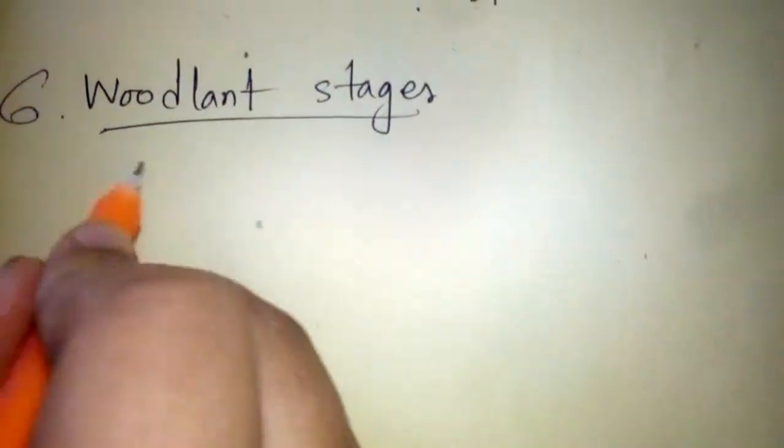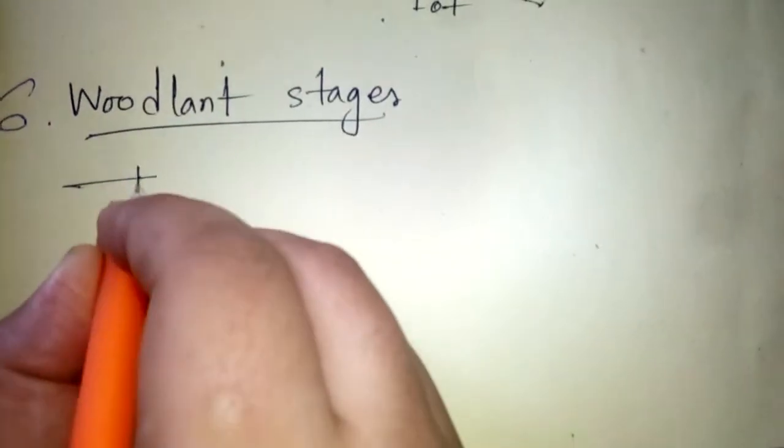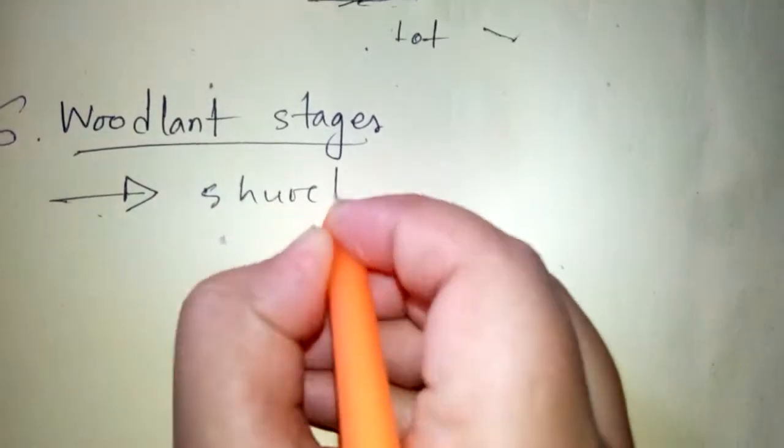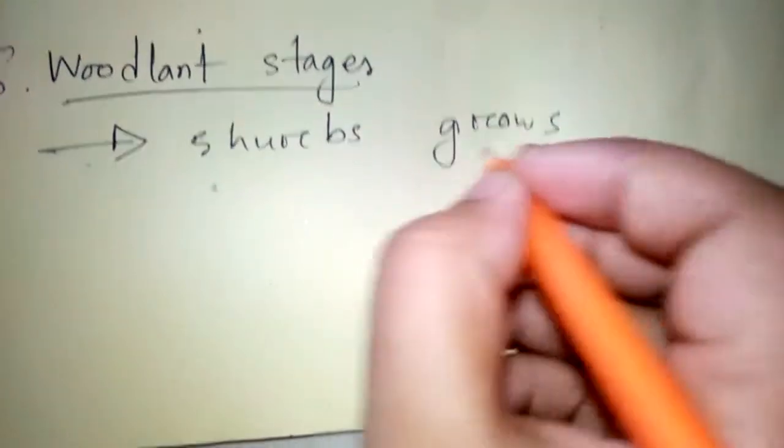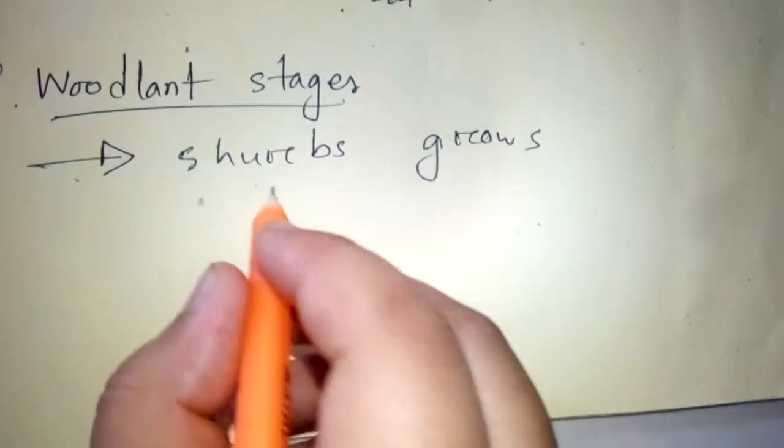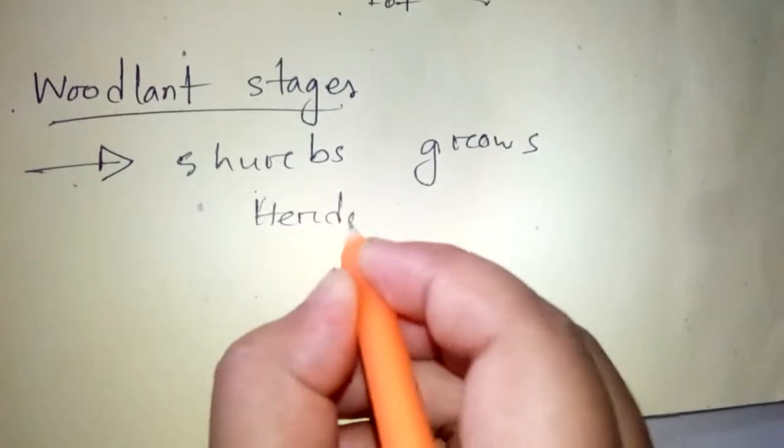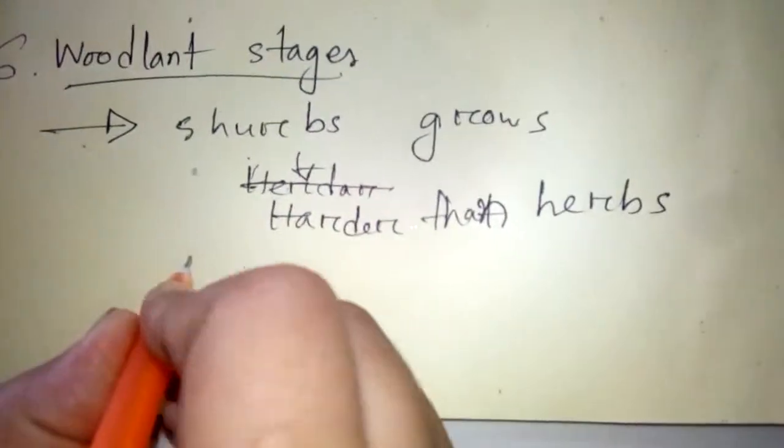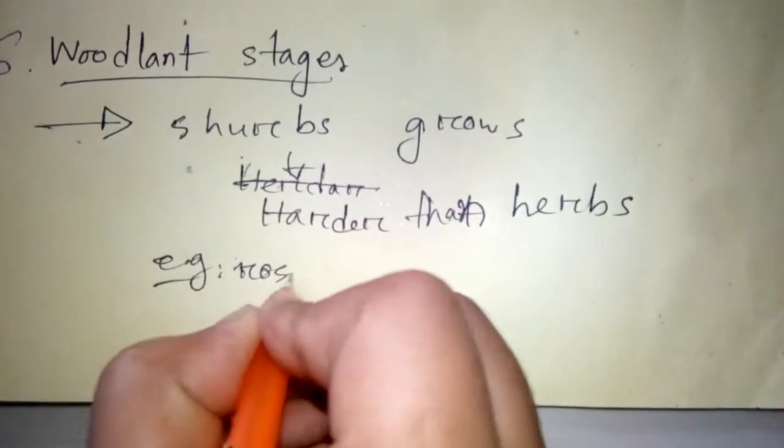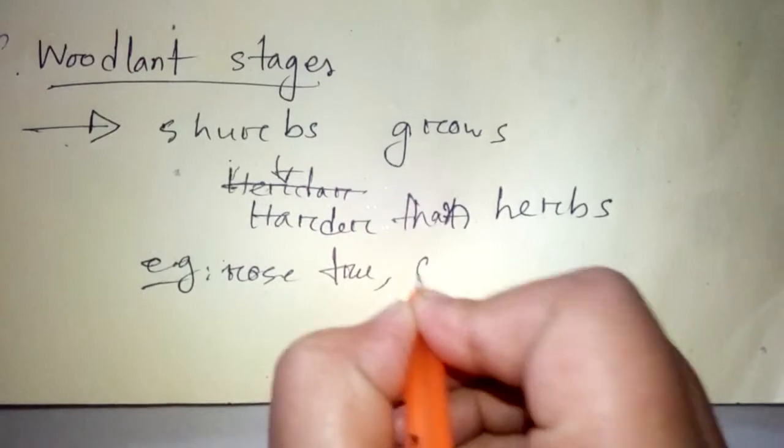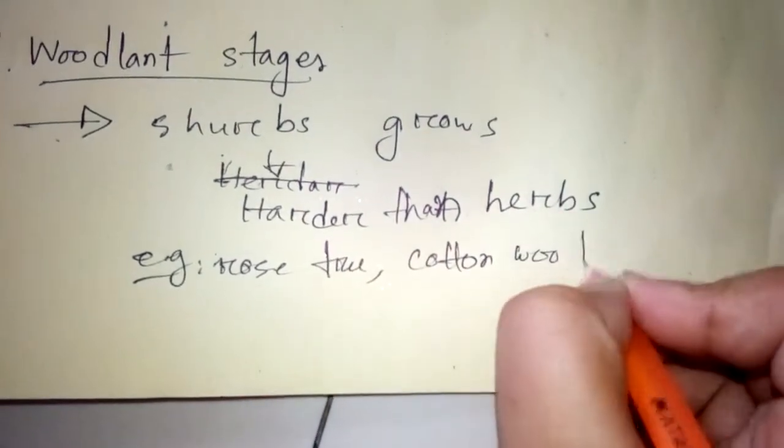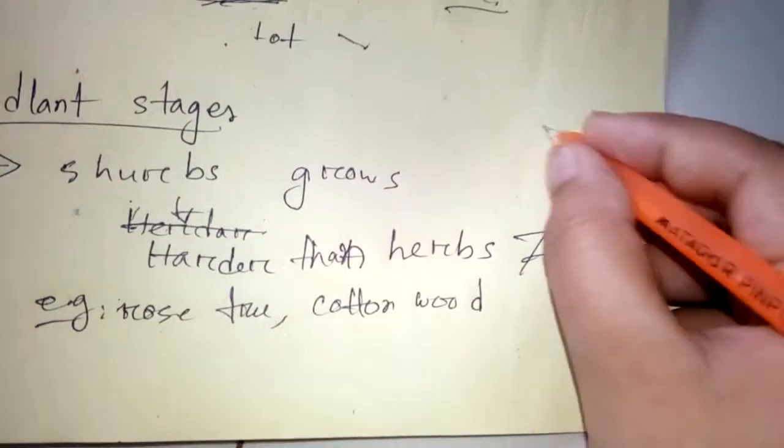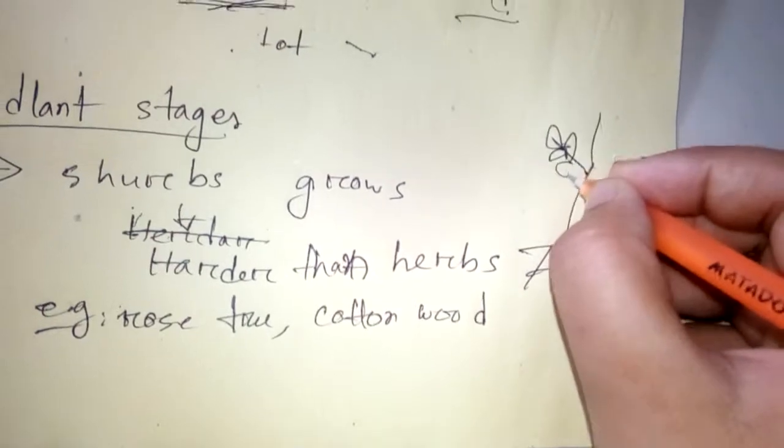Number six is woodland stage. Woodland stage is when shrubs grow. Shrubs are tall and harder than herbs. Examples are rose cherry, cottonwood, etc. They grow on soil and are smaller than trees.